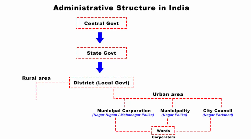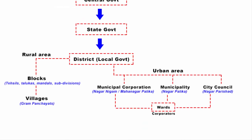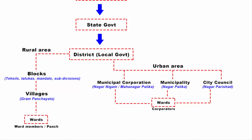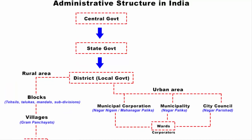In rural areas, villages are categorized under blocks, also called tehsils, talukas, mandals or subdivisions. Under a single block there are several villages, and every village has a Gram Panchayat. A village is divided into wards, and from every ward a ward member is elected by the locals. All ward members are called Panch, and they collectively elect a Sarpanch, who becomes the president and head of the Gram Panchayat.